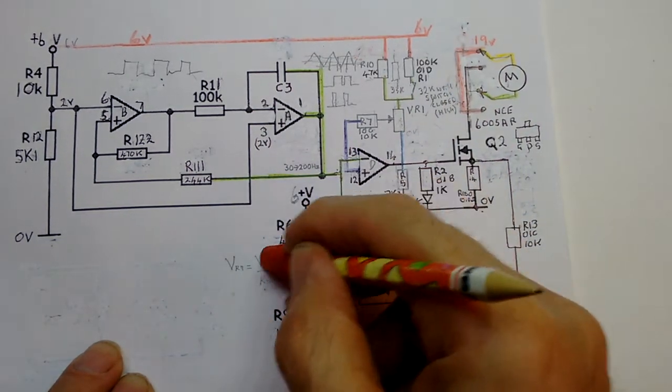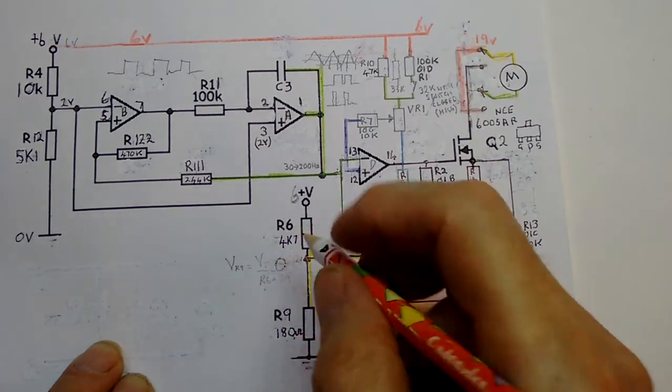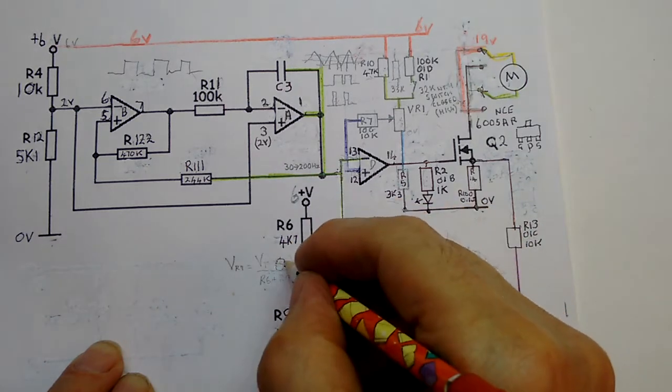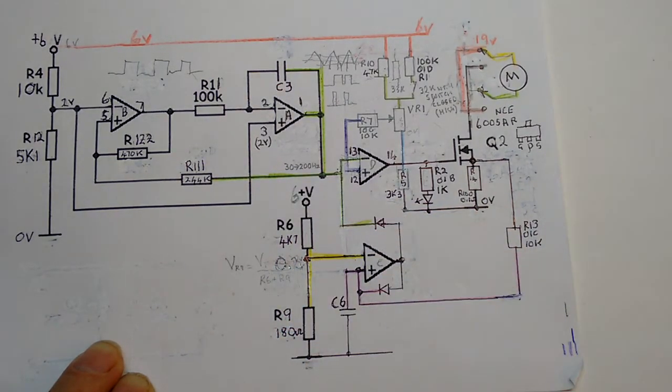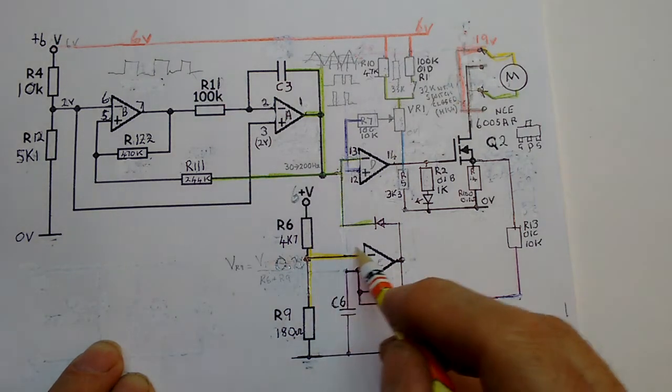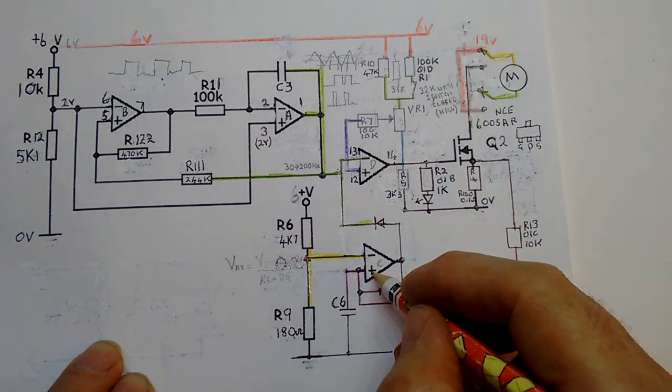So if we work that out, we find that we get something like 0.2 volts. So this one has 0.2 volts in it. So as long as this is less than 0.2 volts, the output will be low.